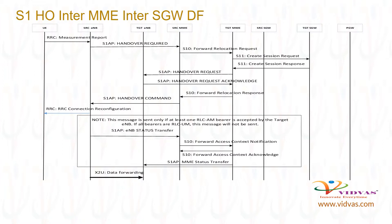Source MME sends S1-AP Handover Command to source ENB. Source ENB sends RRC Connection Reconfiguration message to UE, indicating to camp onto target ENB. S1-AP ENB Status Transfer is sent by source ENB to source MME only if at least one RLC-AM bearer is accepted by the target ENB. If all bearers are RLC-UM, the S1-AP ENB Status message will not be sent. Source MME sends S10 Forward Access Context Notification to target MME. Target MME sends S10 Forward Access Context Acknowledge to source MME. Target MME sends S1-AP ENB Status Transfer to target ENB.